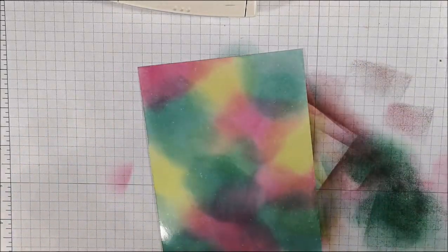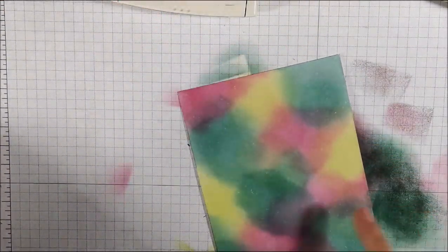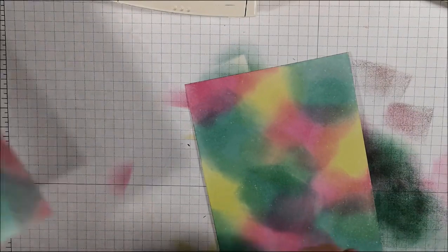You could use just the two colors. You could use the three colors. So there's my sponged on background. That was using the Tranquil Tide, the Berry Burst, and Lemon Lime Twist.